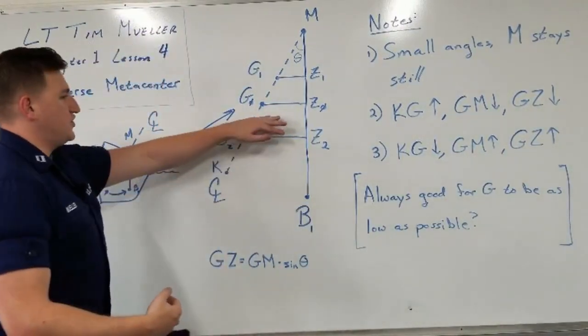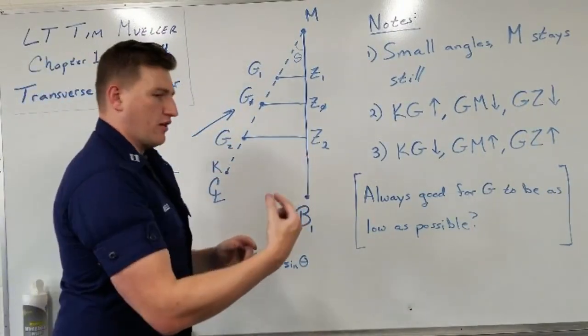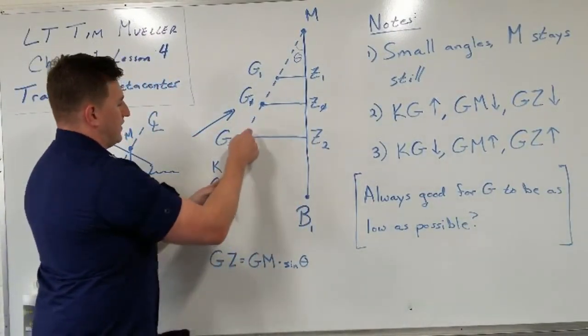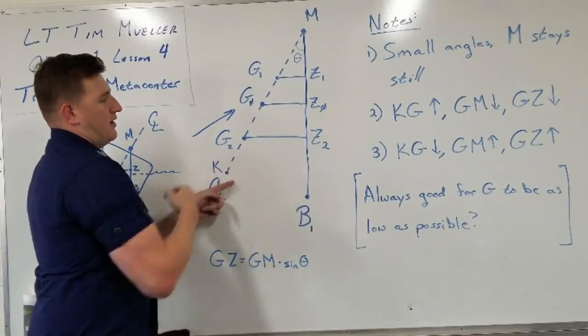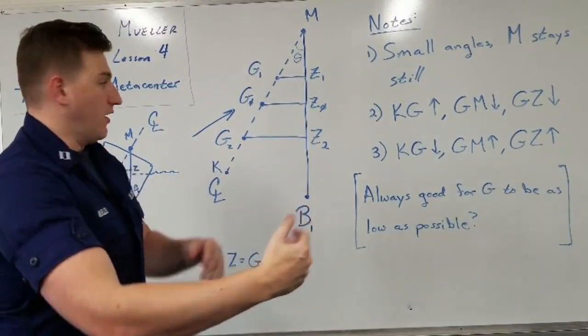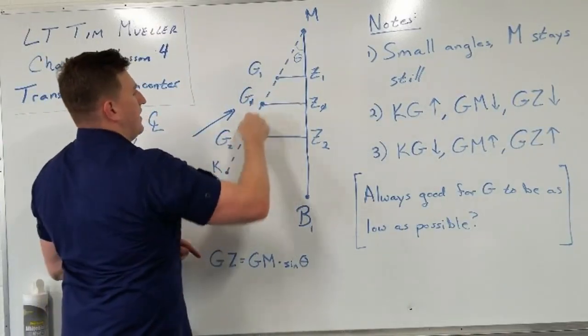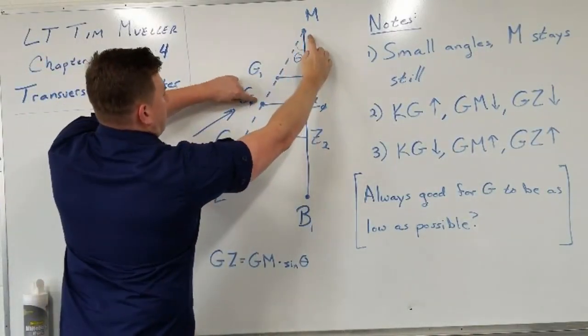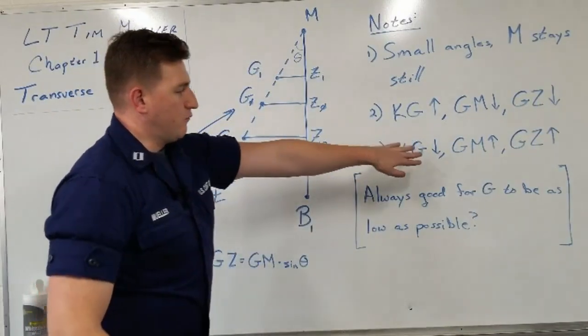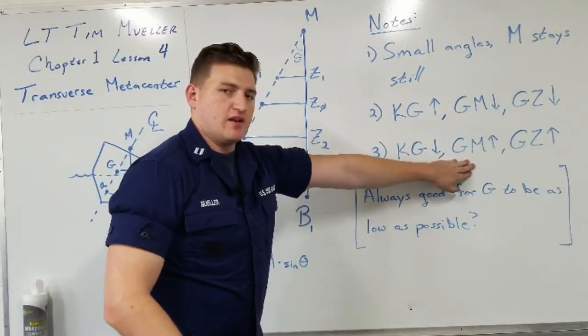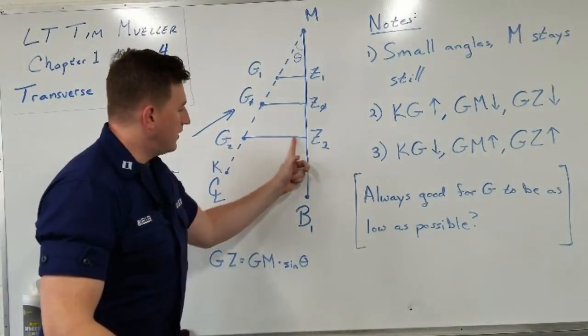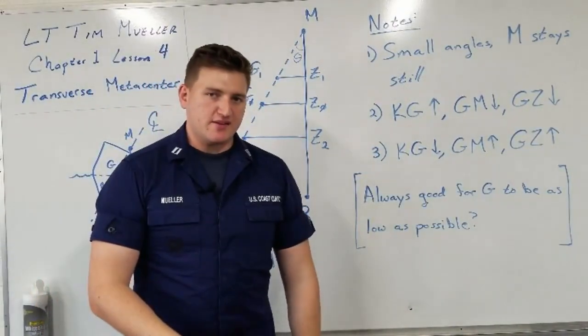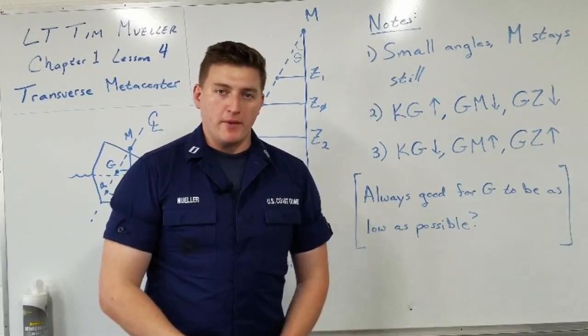Inversely, if we take KG to get smaller, so the distance from the keel to the center of gravity gets smaller, meaning we're going from here to here, our GM gets bigger. So the distance from G to M goes from here to here. With that increase in GM, now we increase our GZ, our righting arm. And if our displacement stays the same, then our righting moment increases.